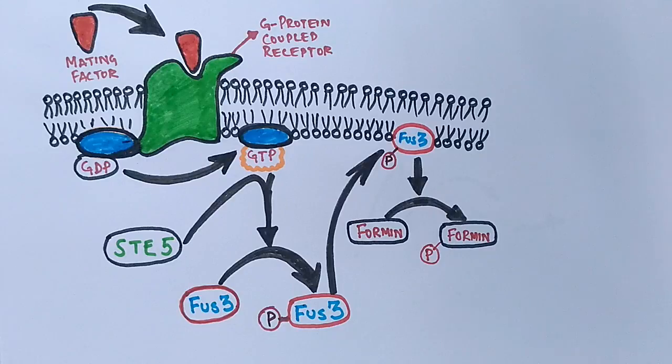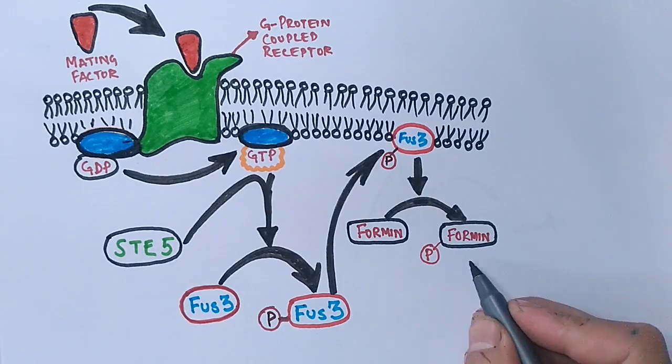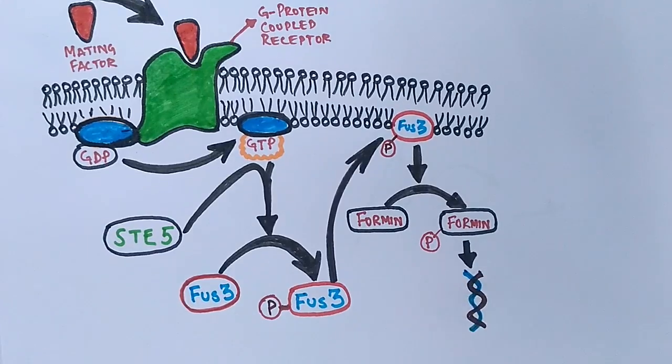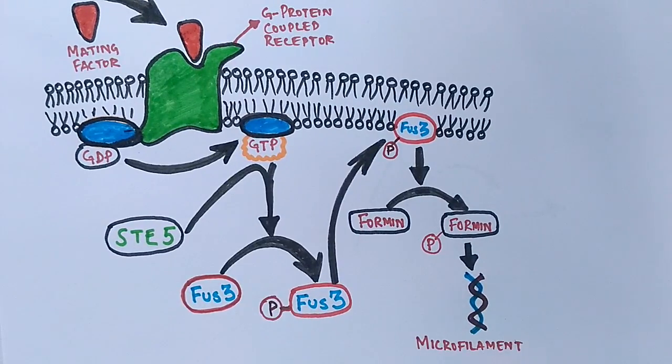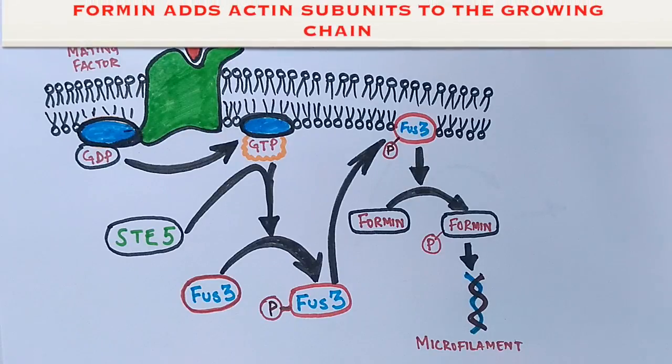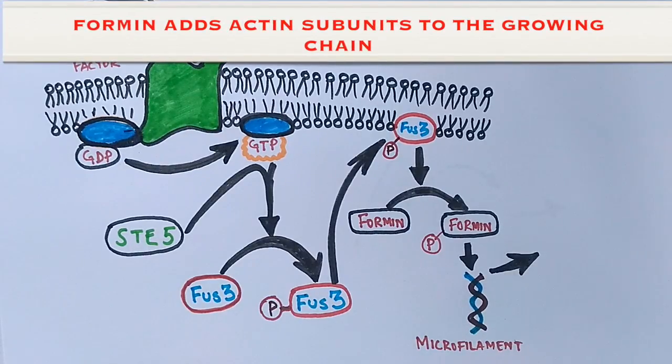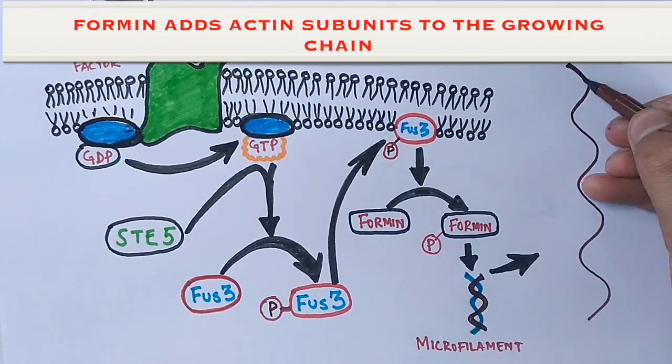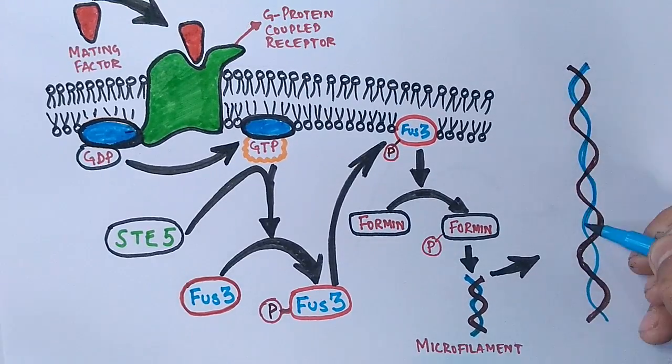As we know, formin proteins are involved in the polymerization of microfilaments and associate with the fast growing end of microfilaments. So now, this formin will act on microfilaments where it drives the polymerization of microfilaments, and finally the yeast cell grows a long microfilament.